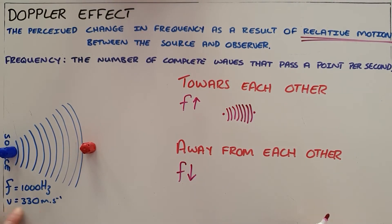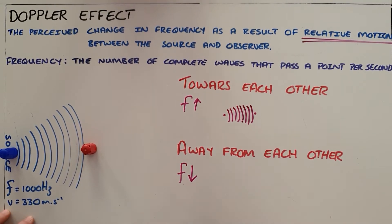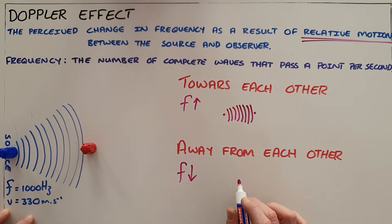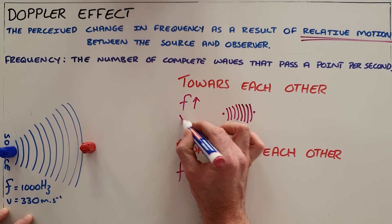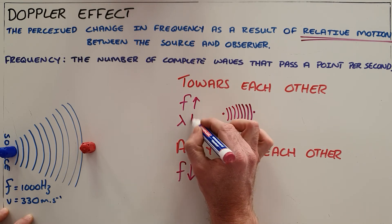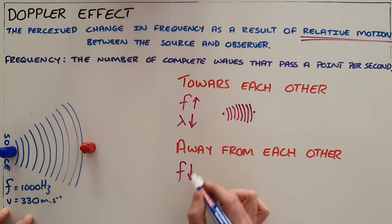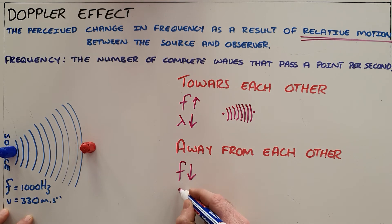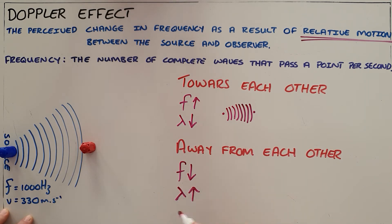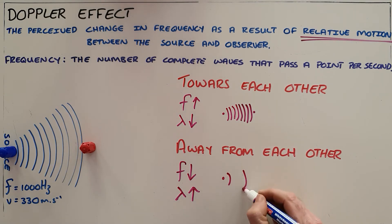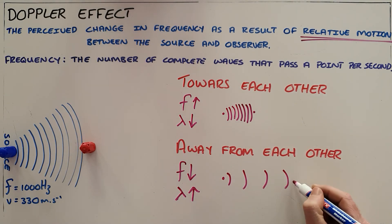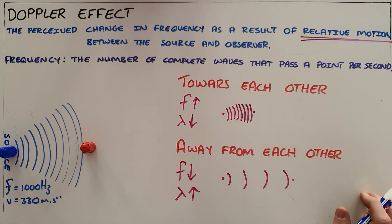Since the speed of sound in air is always a constant — always around 330 meters per second — in order for the frequency to increase the wavelength must decrease, and when they are moving away from each other, in order for the frequency to decrease the wavelength must increase, meaning the waves get longer as they appear to spread out between the source and observer as a result of the relative motion.